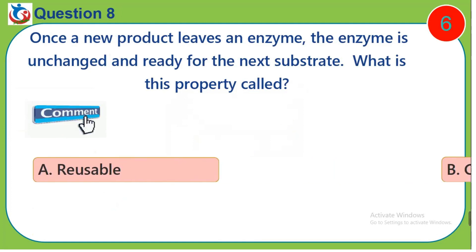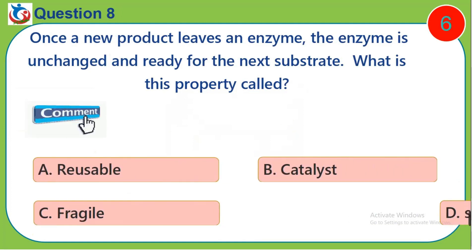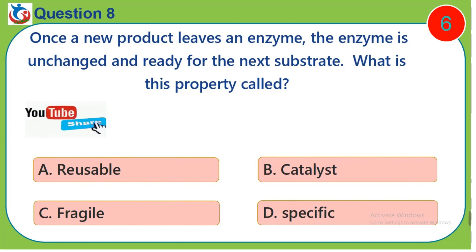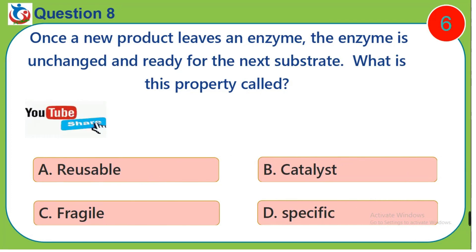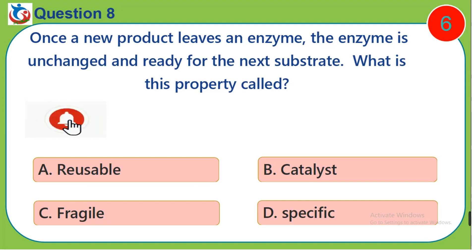Question 8. Once a new product leaves an enzyme, the enzyme is unchanged and ready for the next substrate. What is this property called? A. Reusable. B. Catalyst. C. Fragile. D. Specific.